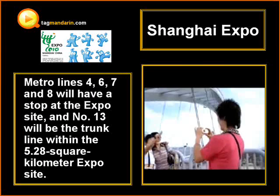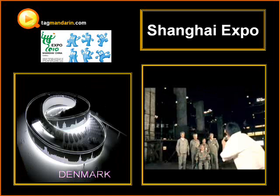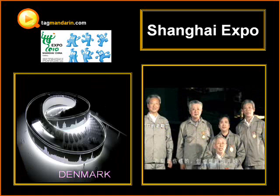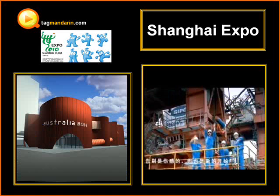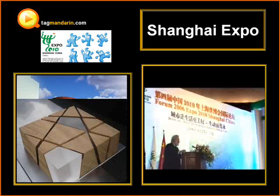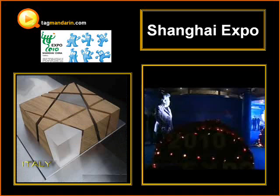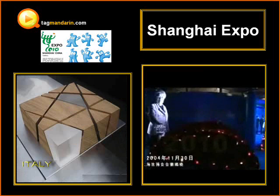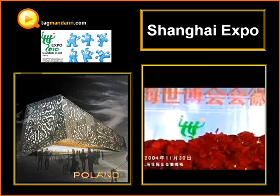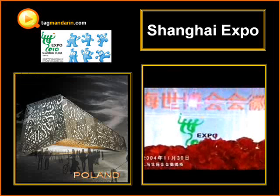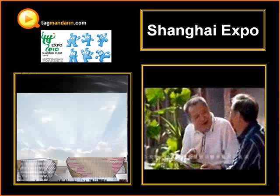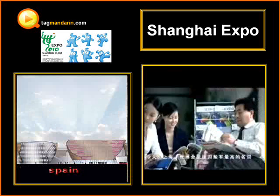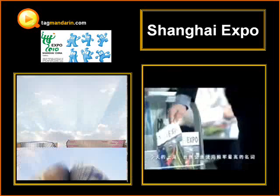Zhi xian. Zhi — for a shaft or a pencil: yi zhi bi; for a song: yi zhi ge; yi zhi qi zi; for an army: yi zhi jun dui.